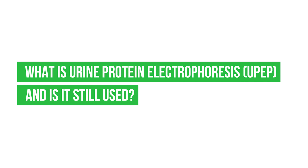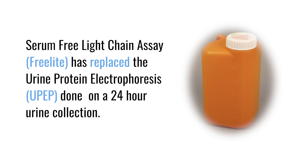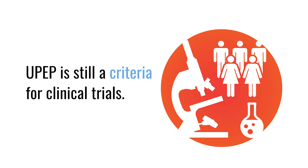What is urine protein electrophoresis, or UPEP, and is it still used? Much like the skeletal survey, urine evaluation of free light chains and Bence-Jones proteinuria is probably something that we can move beyond. The serum free light chain assay has in many ways supplanted urine analysis of monoclonal protein. That said, it still remains a criteria for clinical trials and is relevant to obtain in that context. In clinical practice, less so.